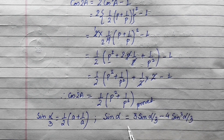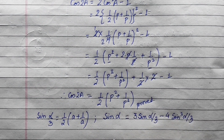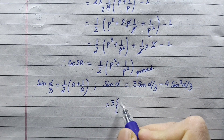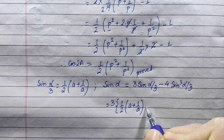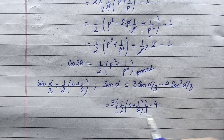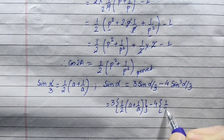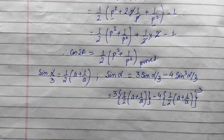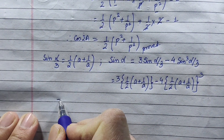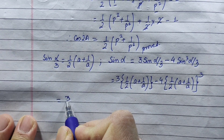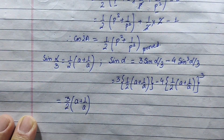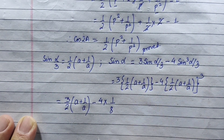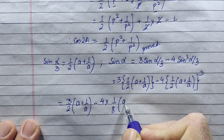3 is 3 times cube than cube, then we get 4 on cube. We replace and substitute: 3 times bracket half a plus 1 by a, minus 4 times the whole cube of half a plus 1 by a. We simplify: 3 by 2 times a plus 1 by a, minus 4 into half a plus 1 by a cubed. This gives a plus 1 by a.